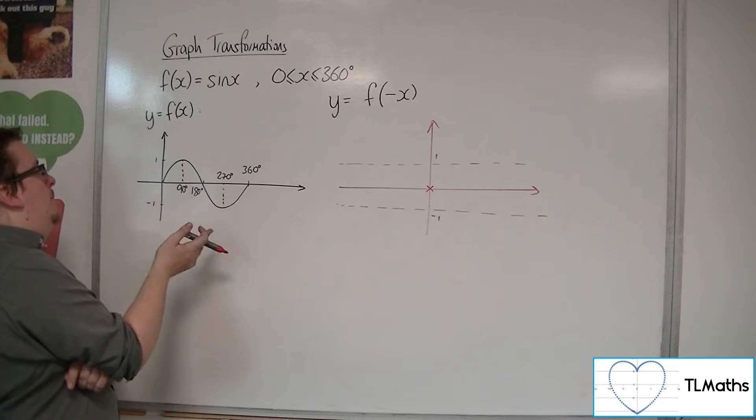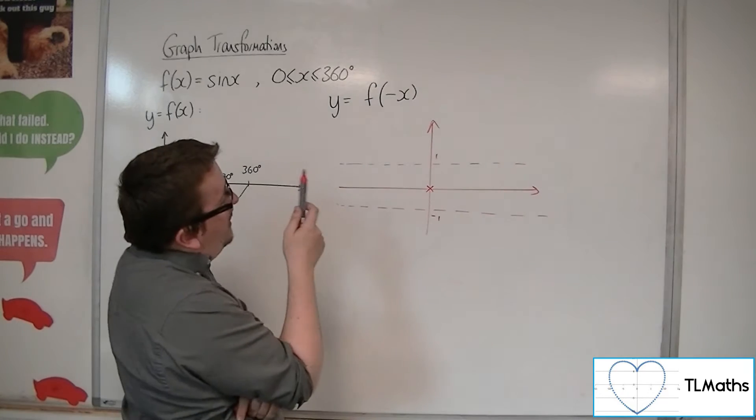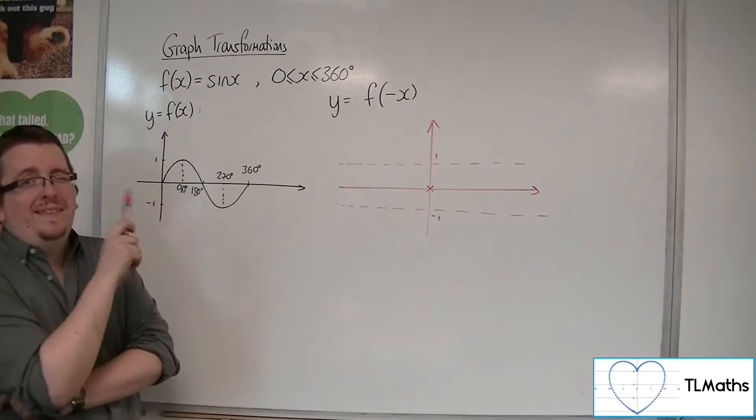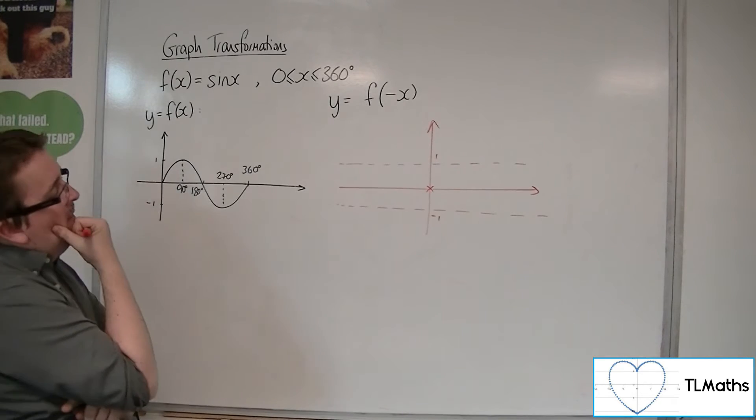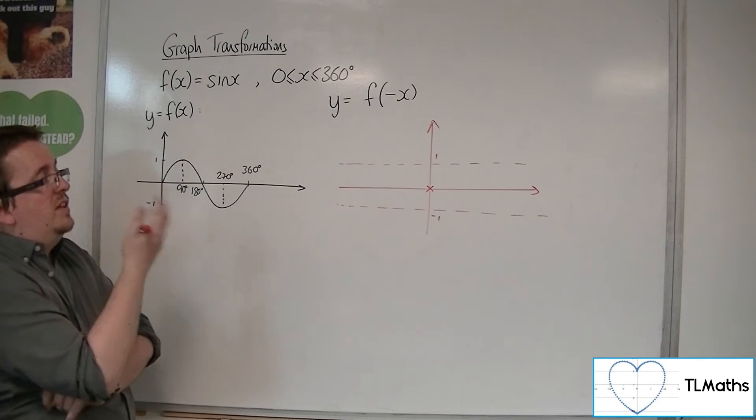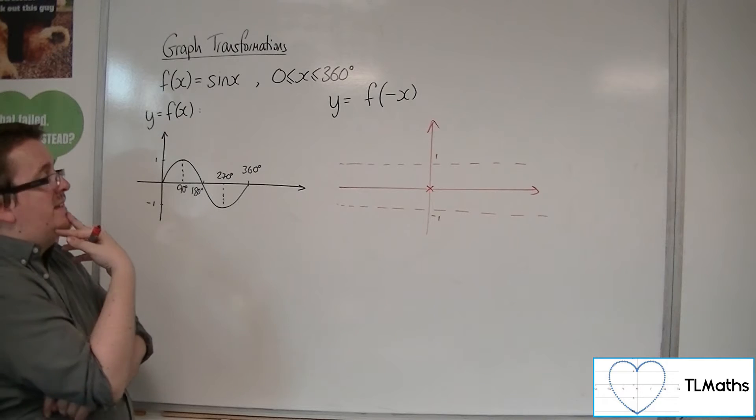Now, how about when x is 90? Well, then I get f of minus 90, which I don't know anything about. It's not on my graph. So that means that the curve doesn't exist when x is 90.